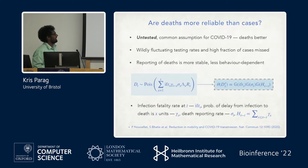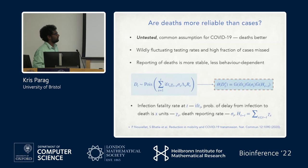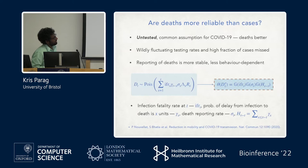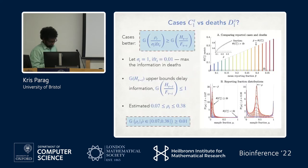You can write down a death model, again a generalized renewal model. The key breakdown gives a geometric mean of a new term: the infection fatality ratio (IFR), the proportion of deaths that are reported sigma, and a cumulative delay from infection to death. This will actually be an upper bound on its actual value. We can then pose the question: which one is better? Rearranging gives a threshold criterion.